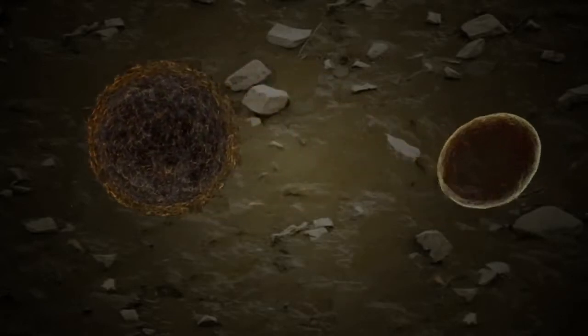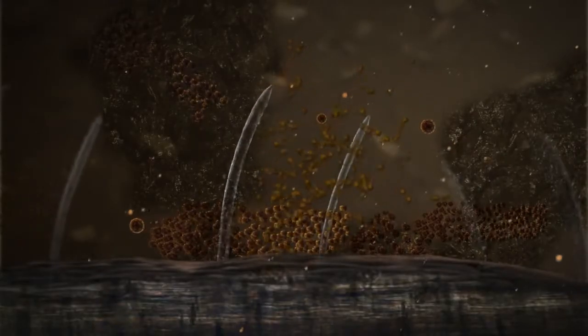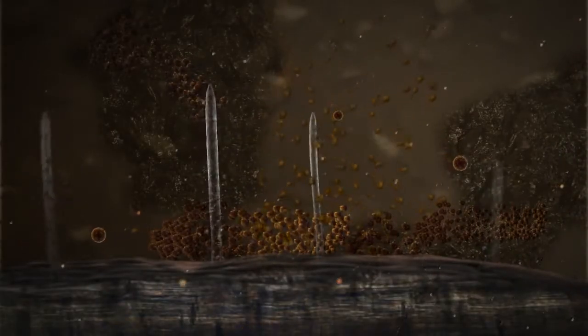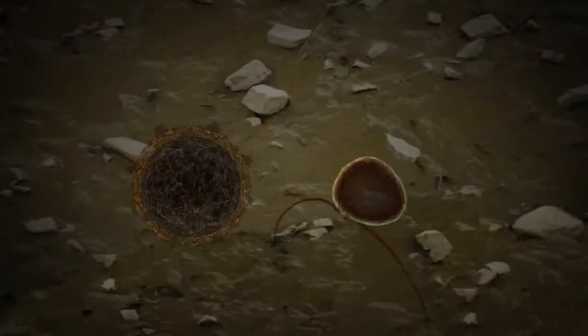In wet soil, the newly formed zoospores swim from soil particle to particle in a film of water until they find and infect a root hair. When the soil is dry, the zoospores are trapped in place and unable to infect root hairs. This is why clubroot levels are generally low in dry years, even in fields where an abundance of resting spores are present.